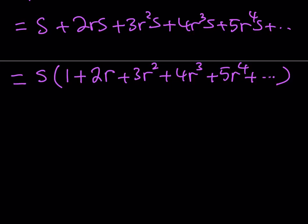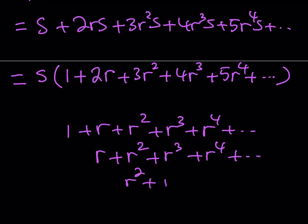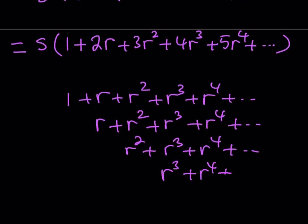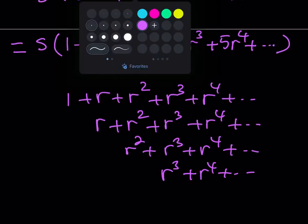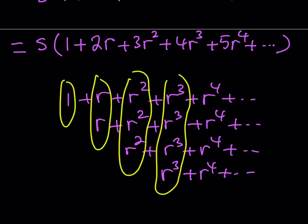One of the approaches is to just add shifted copies of s. I'm going to write 1 plus r plus r squared plus r cubed plus r to the fourth, and then shift it over and start with r: r plus r squared plus r to the third plus r to the fourth. Then shift again starting with r squared, and then starting with r cubed, so on and so forth. What this gives me is: one, two r, three r squared, four r cubed, five r to the fourth. And that's basically what I need, and then I multiply that sum by s.